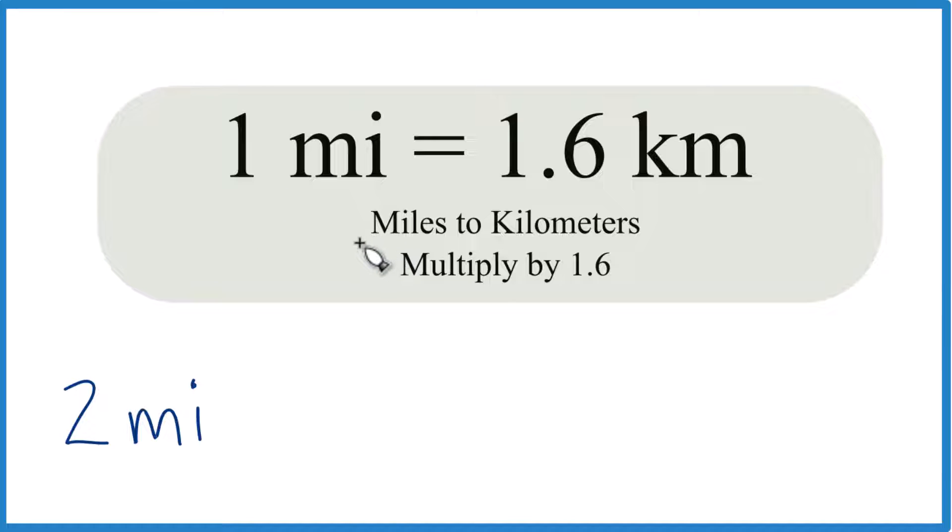So here's how you do it. When you're changing from miles to kilometers, you need to know that one mile equals 1.6 kilometers. So for every mile, we have 1.6 kilometers. Sometimes you'll see this as 1.609 or 1.61, we're just going to use 1.6 here.